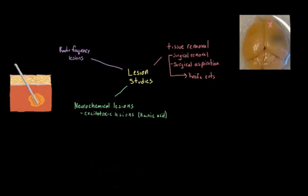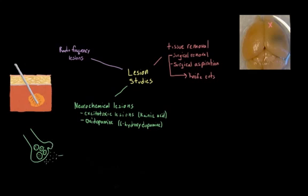Another type of neurochemical lesion is created by a chemical called oxydopamine, or 6-hydroxydopamine. And this is a really useful chemical that selectively destroys dopaminergic neurons as well as noradrenergic neurons, or neurons that release dopamine and norepinephrine noradrenaline.